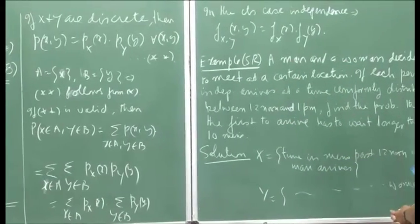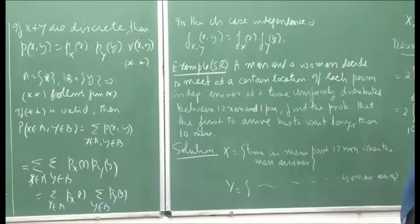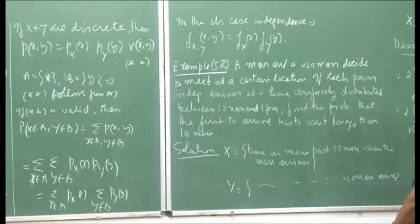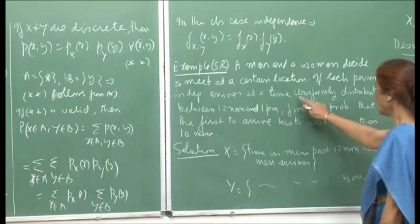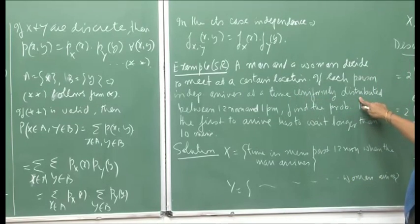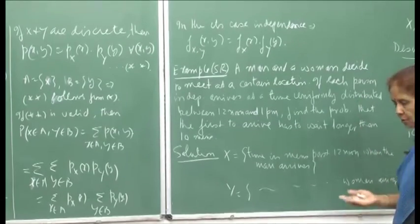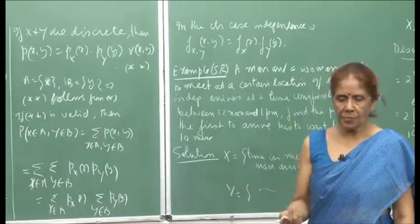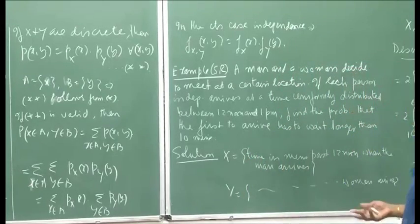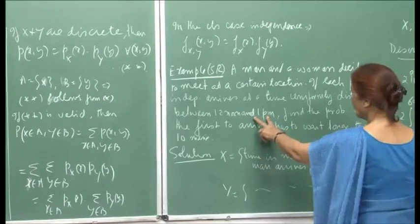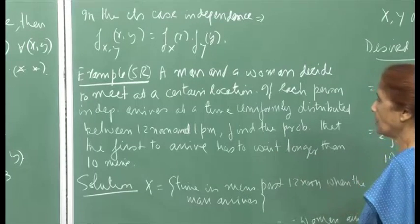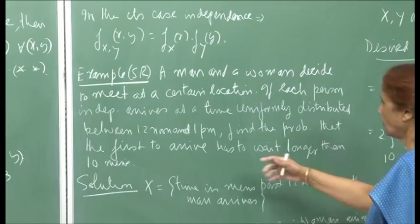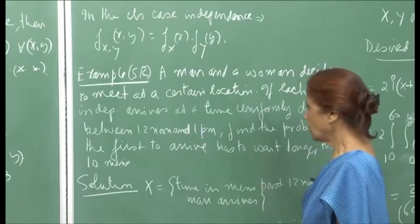I will take this example from Sheldon Ross to show the computations and how we make use of independence of random variables. A man and a woman decide to meet at a certain location; each person independently arrives at a time which is uniformly distributed between 12 noon and 1 pm. We have to find the probability that the first to arrive has to wait longer than 10 minutes. I converted the PDF as 1/60 for each.